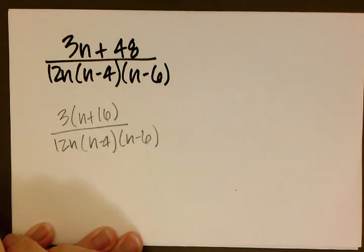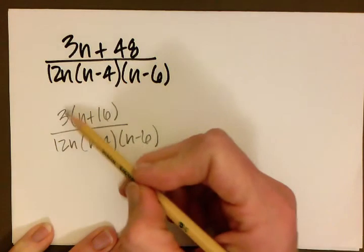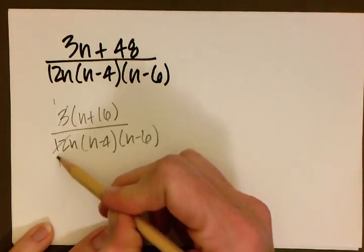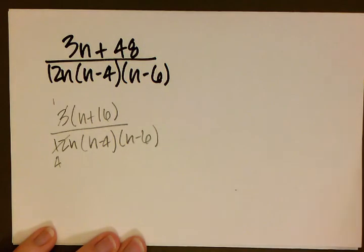Our denominator once again stays the same. And we're left with one more step, and that is that we can see if there's anything that we can reduce. In this case we can. The 3 becomes a 1, the 3 becomes a 1, which means the 12 becomes a 4. And we're now ready to write our final answer.